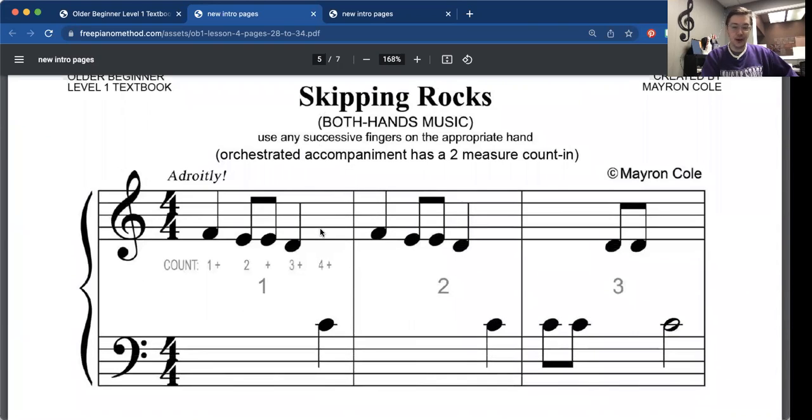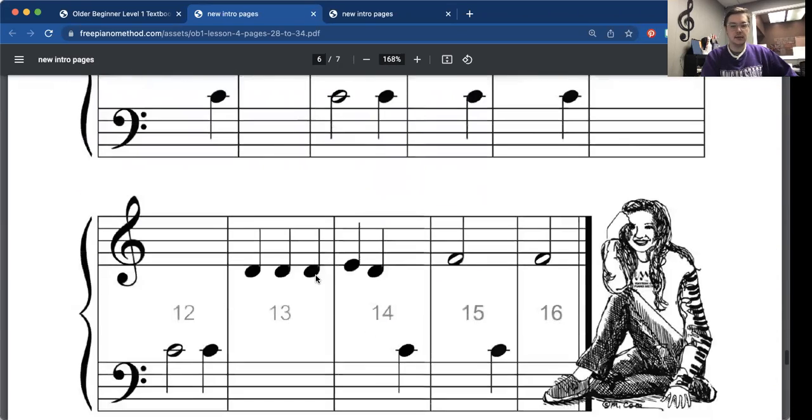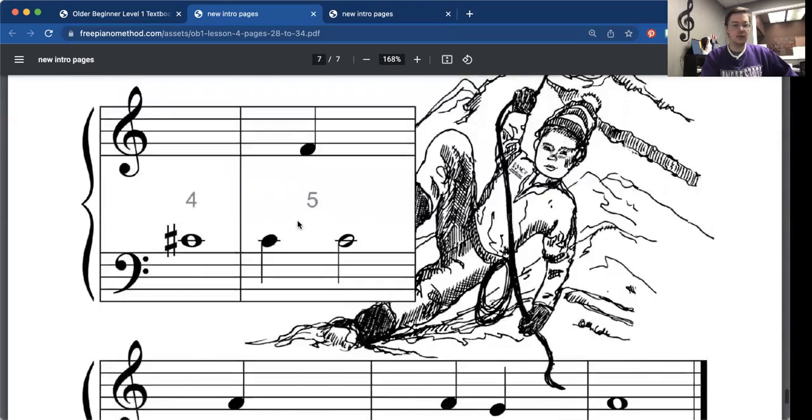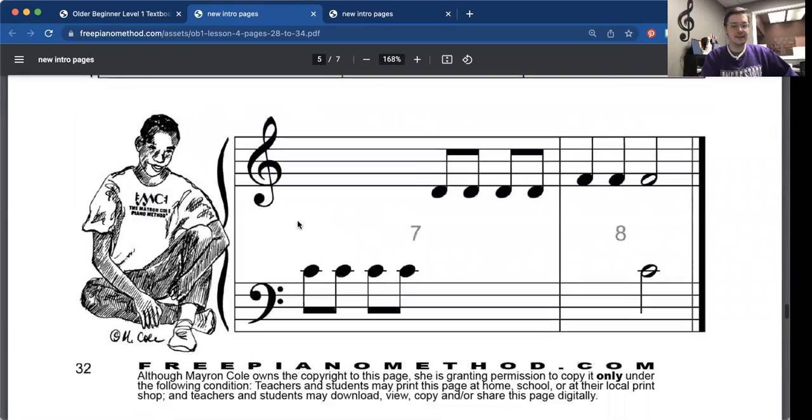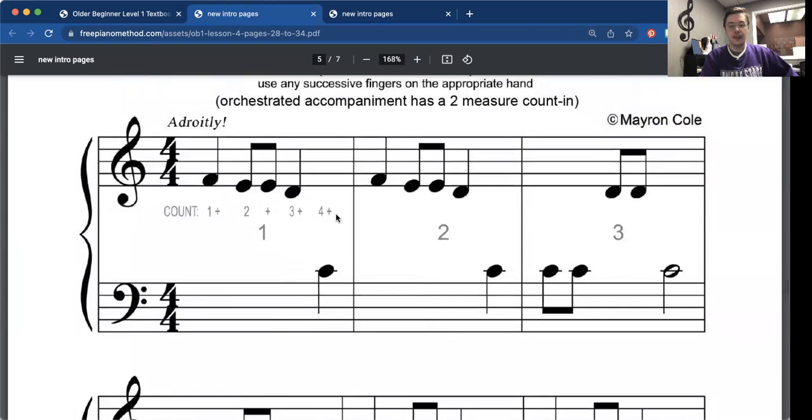And then we have skipping rocks. So in skipping rocks, squeaky gate and mountain echo, you notice we only really have one note in the left hand just to kind of give you a little heads up. So try to take a guess of what that note is in the left hand. And then I'll give you the answer. So that note right there is the C. It's middle C.